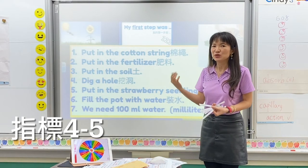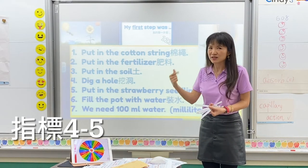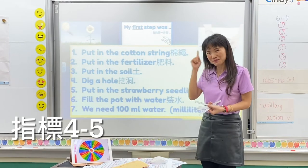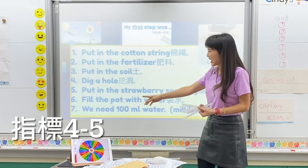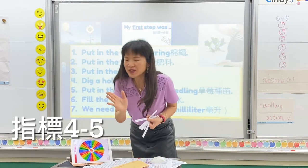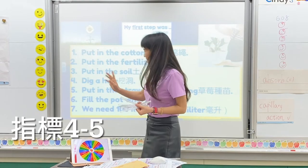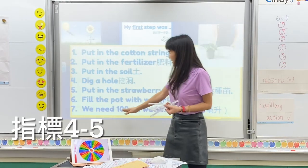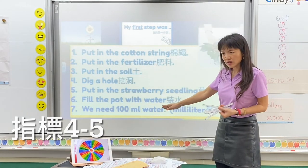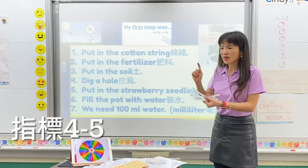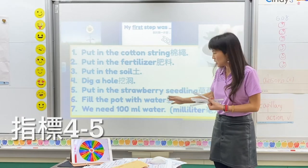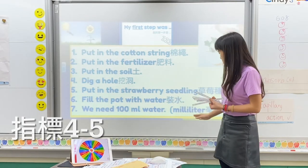Because we need to have the water and the sunlight — do you still remember? Finally, we need how much water? 100mm of water — 一百毫升的水.